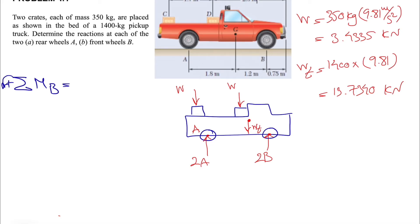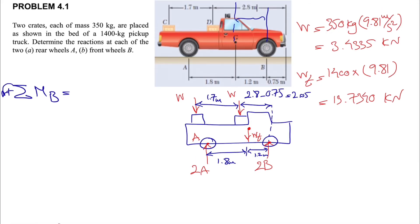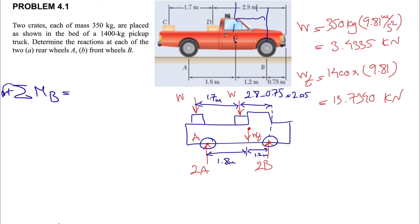To find the reaction at the rear wheels, we take the sum of moments about point B, with counterclockwise positive. First, let's identify all the distances: 1.8 meters, 1.2 meters, the distance between the two crates is 1.7 meters, and another distance calculated as 2.8 minus 0.75, which gives us 2.05 meters.